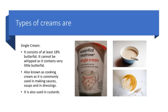Single cream should contain at least 18% of butter fat. It cannot be whipped as it contains very little butter fat. Single cream is also known as cooking cream as it is commonly used in making sauces, soups, and in dressings. Single cream is also used in custards.